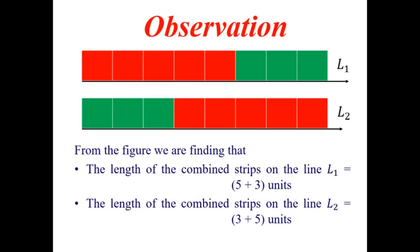So, here, 5 squares are present in red strip and 3 squares are present in green color strip. The first line indicates that 5 red squares plus 3 green squares. The second line indicates 3 green squares plus 5 red squares.